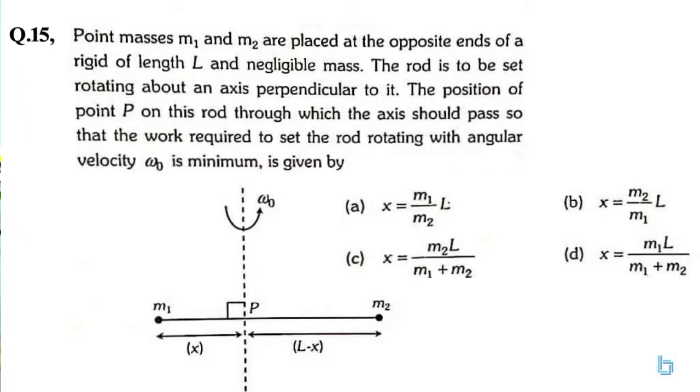Point masses M₁ and M₂ are placed at the opposite ends of a rigid rod of length L and negligible mass. The rod is to be set rotating about an axis perpendicular to it.